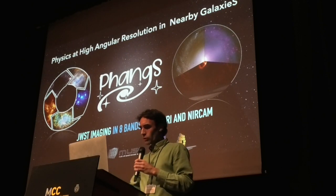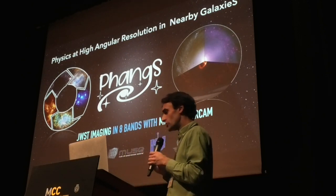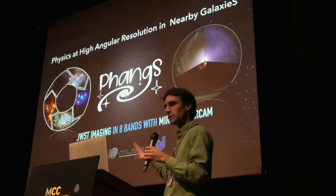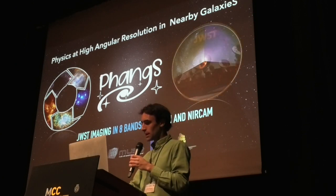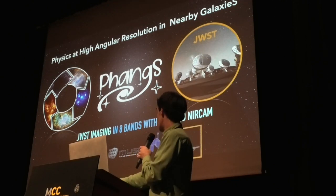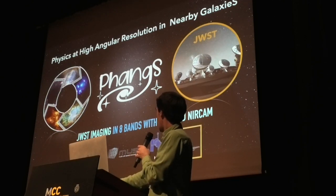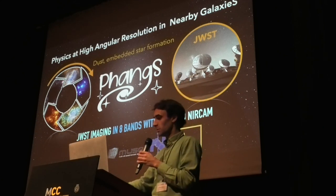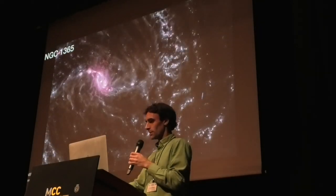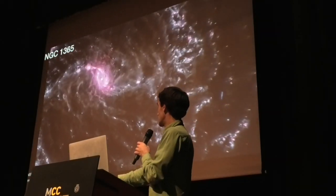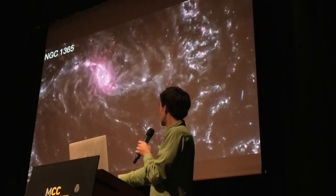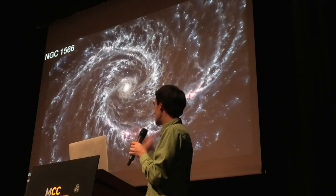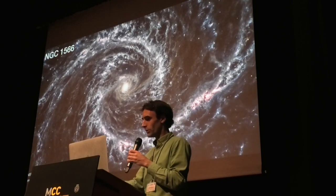More recently, we have also obtained JWST imaging in eight bands with MIRI and NIRCam — not spectroscopy, just imaging, but these images are really stunning. They allow us to track the distribution of dust and embedded star formation in great detail. This is NGC 1365. You can see lots of filaments that we were not able to see before with ALMA, so it's really mind-blowing — it's a whole new game.